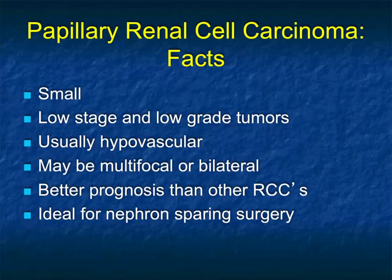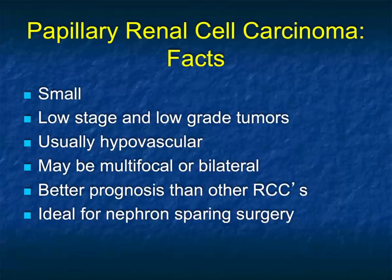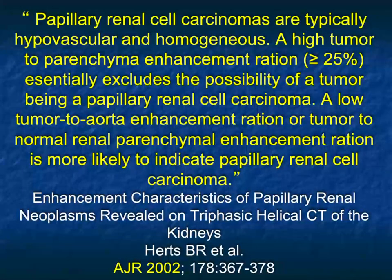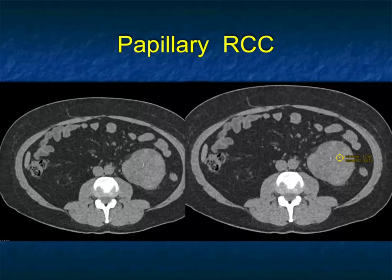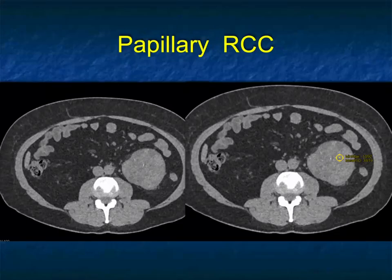Next, let's look at papillary renal cell carcinomas. They're typically small, usually hypovascular, and can be multifocal and bilateral. The prognosis is better and they're ideal for partial nephrectomies, and when small, ideal to simply watch. They're typically hypovascular and homogeneous. An article by Brian Hertz makes the point nicely — typically average attenuation no more than in the mid 60 Hounsfield units. The rule is under 100, or even under 90, it's a papillary RCC.